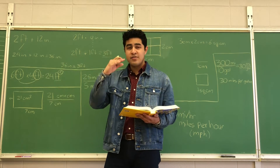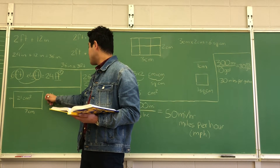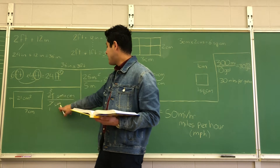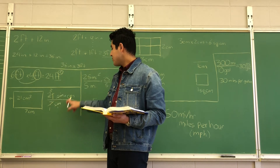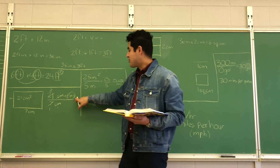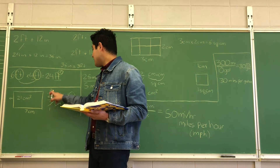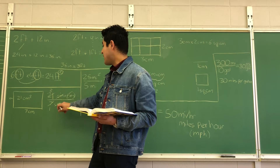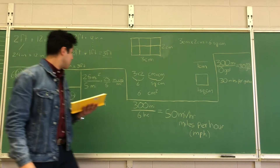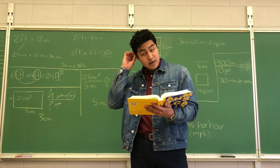Remember how when numbers are the same they cancel out and equal one? Same thing here with units. Seven goes into 21 three times evenly. We cancel out one set of units — centimeter cancels with centimeter — and we're left with just one centimeter. So the width of the rectangle is three centimeters, because those units of measurement have been canceled out.